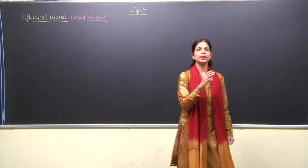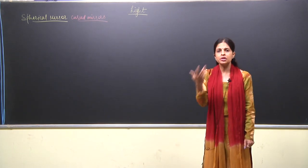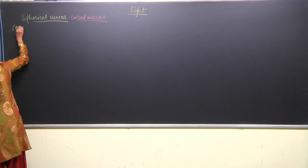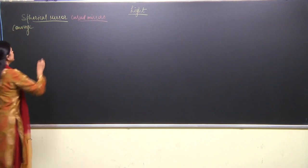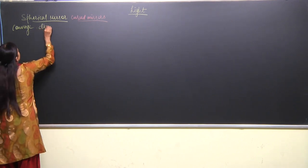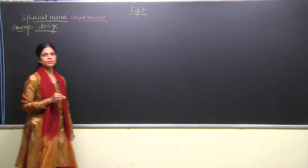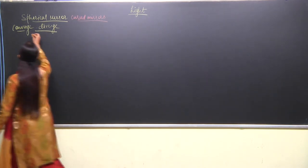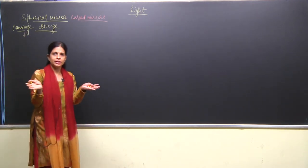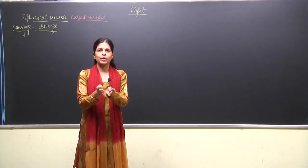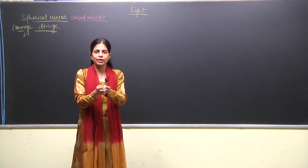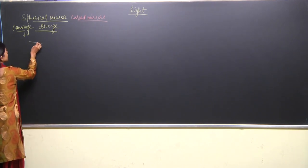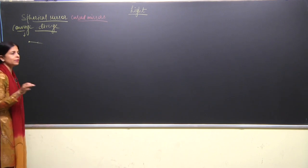Now in a plane mirror only reflection takes place and the direction of the ray changes. But here in the spherical mirror, light can even get converged and even diverged. These are two new terms. Converge means when different rays of light come together — when rays come together and meet at one particular point, this is known as convergence.